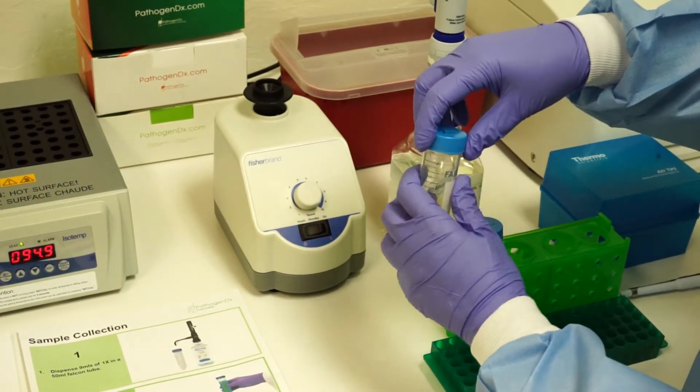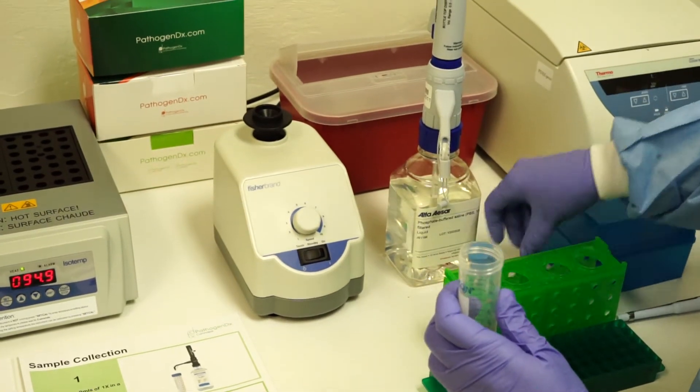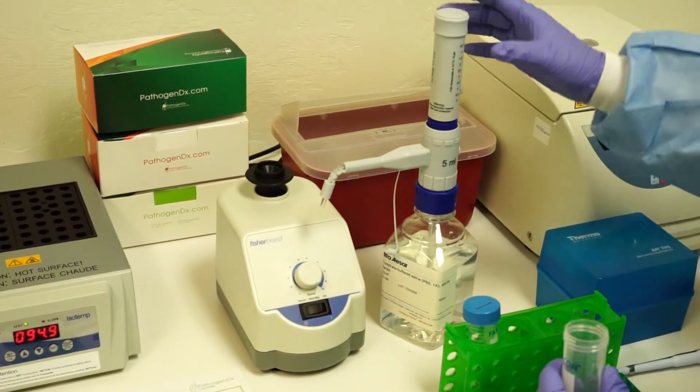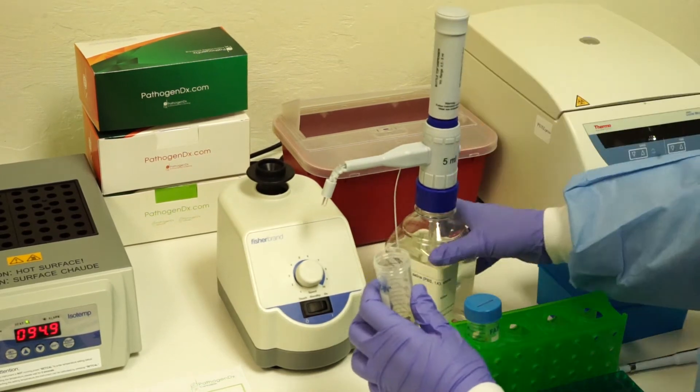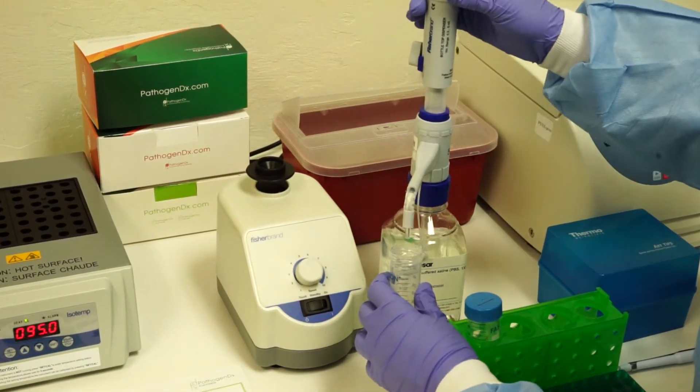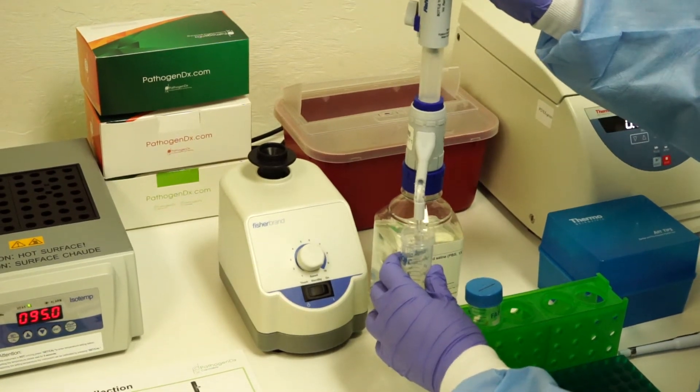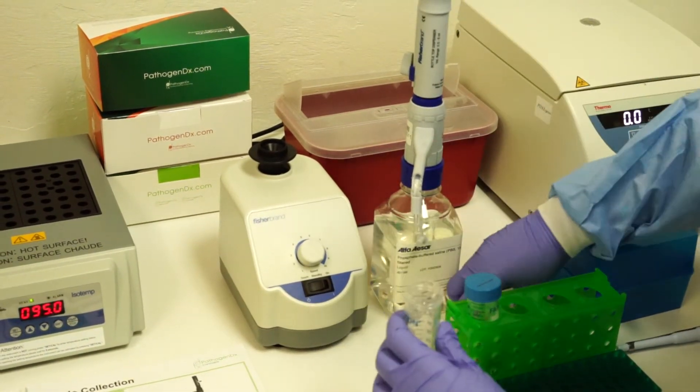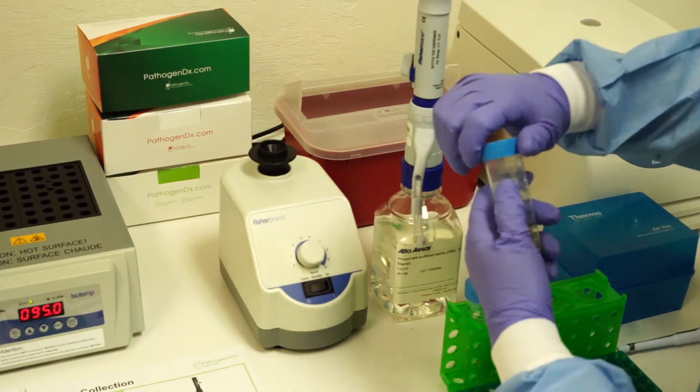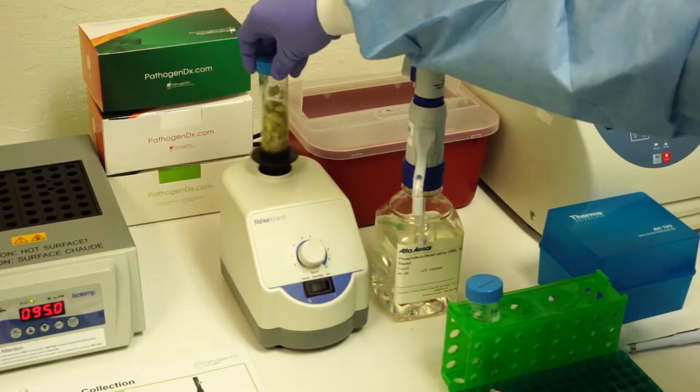The second step is to dispense 9 mls of 1X PBS. Set your bottle top dispenser to 4.5 mls and dispense twice for a total of 9 mls. Replace the cap on the tube and vortex for 10 seconds.